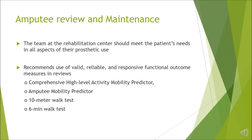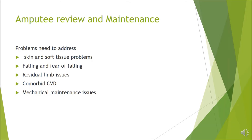As the final phase, amputee review and maintenance — we should revisit rehabilitation goals and the patient's needs and provide necessary adjustments. Valid and reliable functional outcome measures like the amputee mobility predictor, 10-metre walk test or 6-minute walking test are important to assess and monitor functional improvement. Other problems to address in reviews include skin and soft tissue problems, falling and fear of falling, residual limb issues, ulcers on the sound side, comorbid cardiovascular diseases, and mechanical maintenance issues with prosthetic parts.